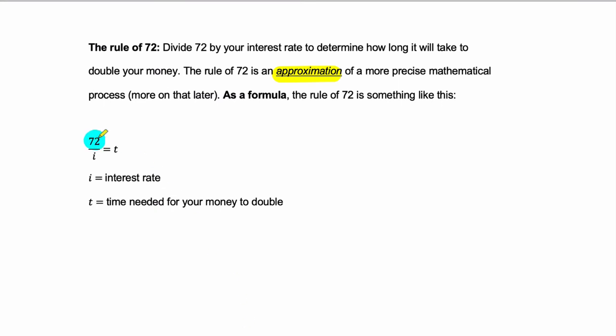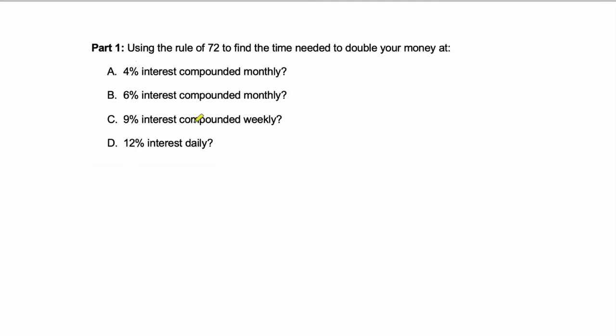You take 72, you divide it by your interest rate, and that tells you the amount of time it will take. So i is your interest rate, and T is the time needed for your money to double. So it's actually as simple as it sounds, which is maybe surprising. Sometimes in math it doesn't feel that way.